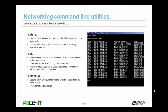Netstat is used to list all inbound, outbound TCP/IP connections on a given node — very useful in determining which connections are consuming network resources. The Net command is most commonly used to map a remote shared drive or resource to the current node. For example, to map a network share: net use [drive letter] //[path to shared resource]. It has other great uses — search Windows 7 password recovery to find one of its great applications.